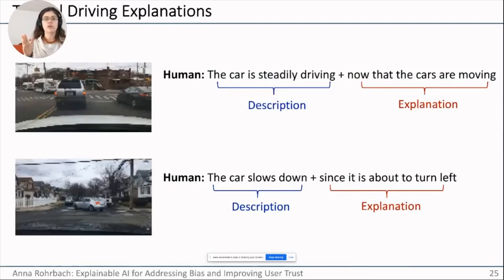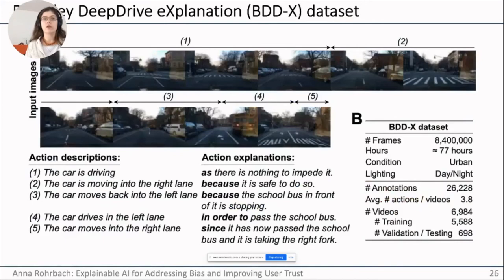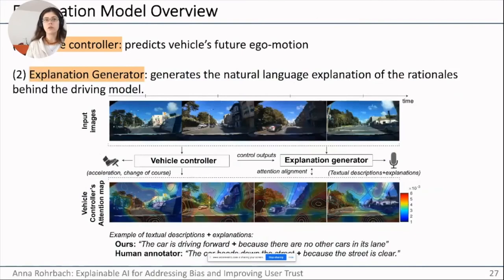Humans can easily describe driving scenes by providing a description of the action — for example, 'the car slows down' — and an explanation for why it happened — 'since it's about to turn left.' We collect a large dataset based on Berkeley DeepDrive data and annotate a subset of videos with description and explanation pairs, capturing how humans explain driving behaviors. We then explore how making this model explainable affects its overall performance.